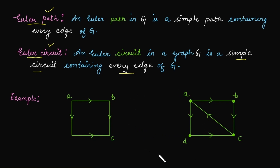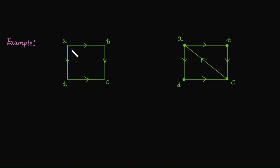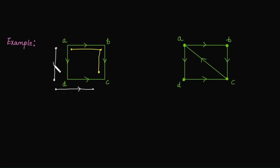Let's try to find the Euler path and Euler circuit for this directed graph. Starting from vertex A, moving towards vertex B, then we can move to vertex C. But can we move to vertex D? No. Trying another way — moving to vertex D first, then to vertex C — from C we cannot cover each and every edge exactly once. So this graph does not have an Euler path or an Euler circuit.